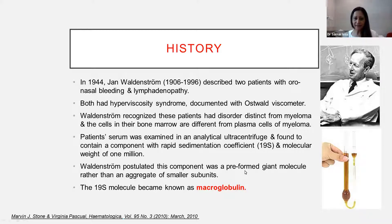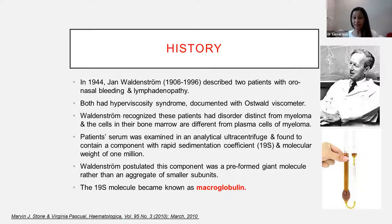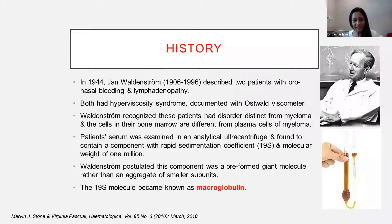It's increased thickness of the blood, documented using an Ostwald viscometer — this is what it looks like, a very simple apparatus. Waldenström recognized that these patients had a disorder distinctive from myeloma, and the cells in their bone marrow don't look like myeloma cells at all. The patient's serum was subsequently analyzed using an ultracentrifuge and found to contain a component with a sedimentation coefficient of 19S and a very high molecular weight of over a million.